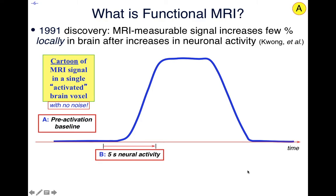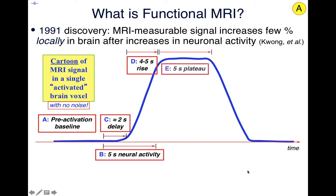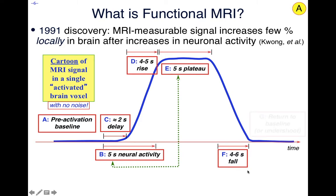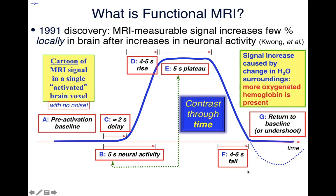Suppose there are five seconds of neural activity — in the first experiments with Ken Kwong it was a flickering checkerboard, later experiments used finger tapping for say five seconds. What happens is there's still a couple of seconds of delay before the signal goes up, then it takes about four or five seconds for the signal to rise to its maximum amplitude. The signal then plateaus for about five seconds if you have five seconds of neural activity; ten seconds of neural activity gives ten seconds of plateau. Then, delayed in time again, there's a four-to-six second fall of the data back toward the baseline, and it either returns to baseline or there may be an undershoot, depending on the position in the brain.